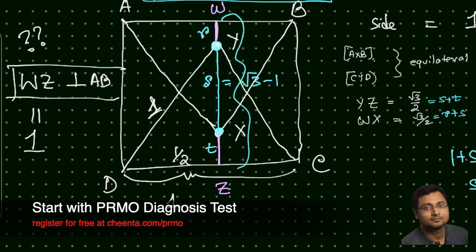As a homework, you can send me two things. One, the argument for WZ is perpendicular to AB. And the second thing is why the length of YZ is square root of 3 over 2. So simple application of Pythagoras theorem.